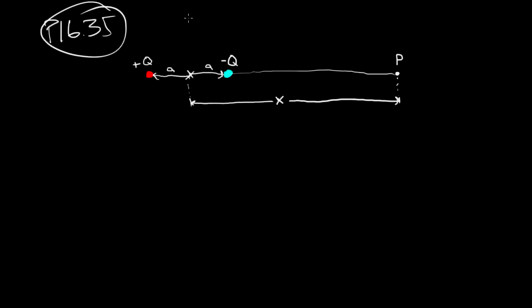All right, here's problem 1635 from Gene Coley. The problem asks us to find E at point P. So what is the electric field over here at point P? And we need to express our answer in terms of four variables: Q, X, A, and K, the thing from the definition of E, which is KQ over R squared.